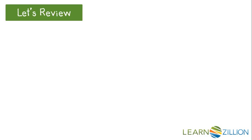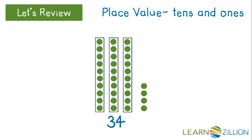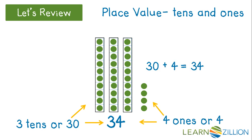Let's review. Place value, tens and ones. This is 34. 3 tens are 30, 4 ones are 4. 30 plus 4 is 34.